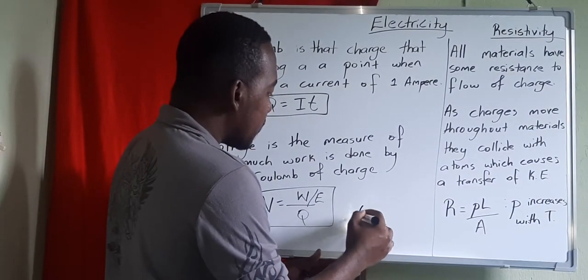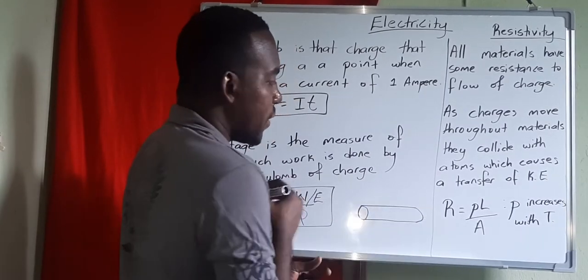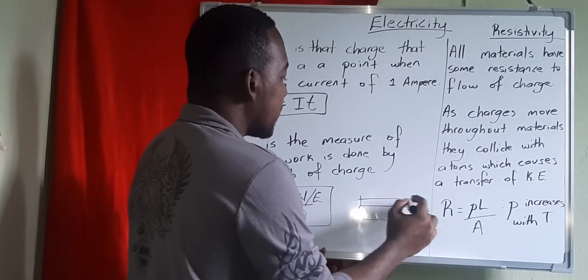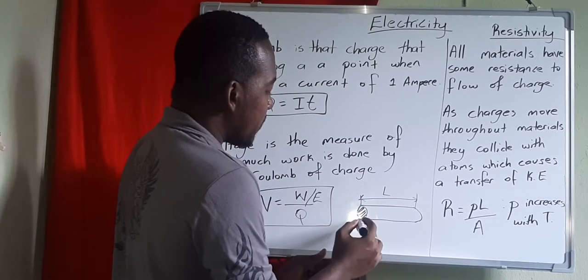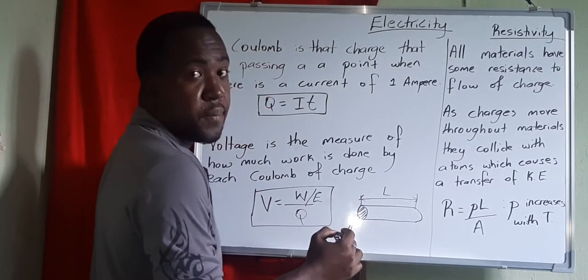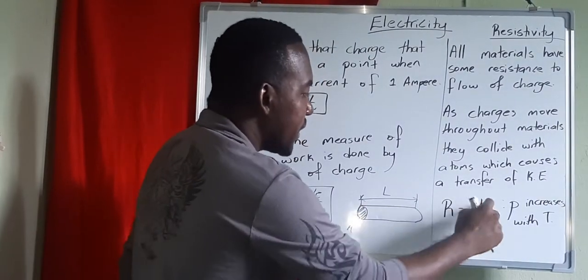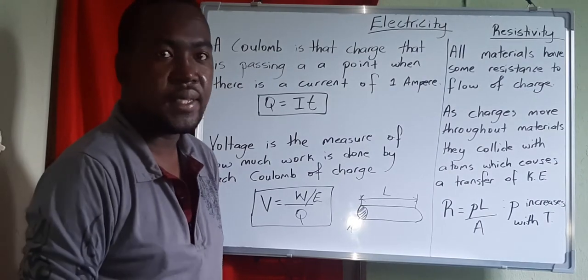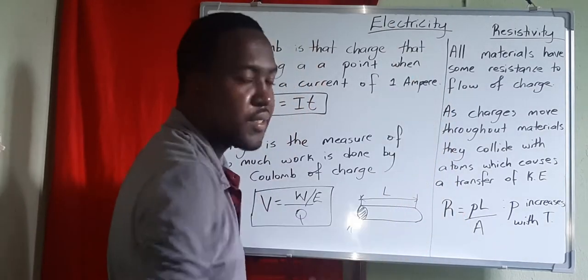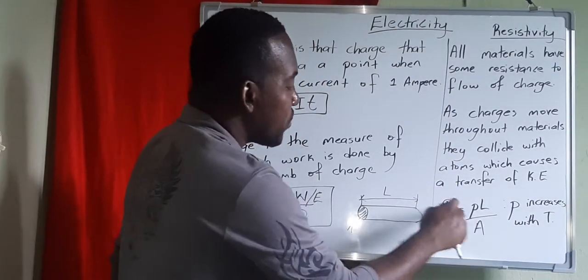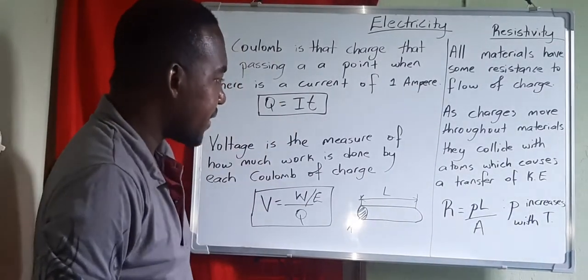If we draw a wire, the length of the wire affects its resistance, and so does the cross-sectional area. Resistance is directly proportional to length — the longer the material, the more resistance it has. It is inversely proportional to area — if the area is large, the resistance is low.